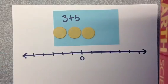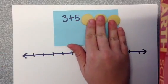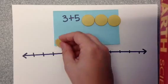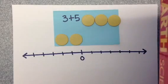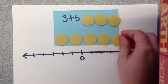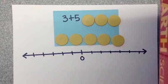So this problem says 3 plus 5. We put out 3 yellow counters, which are positive, and we're adding 5 yellow counters. And then this shows that there is a total of 8.